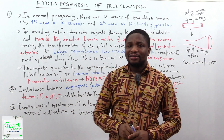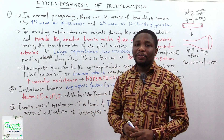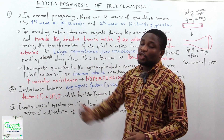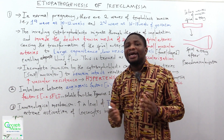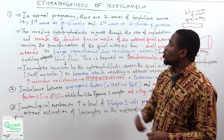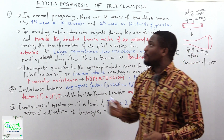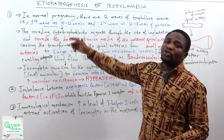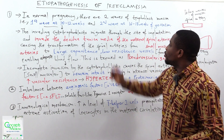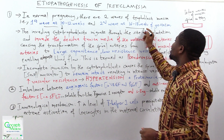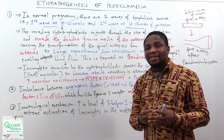We'll start first by looking at the placentation theory. In normal pregnancy, there are two waves of trophoblast invasion. The first wave occurs at 10 to 12 weeks of gestation, and the second wave occurs at 16 to 18 weeks of gestation.